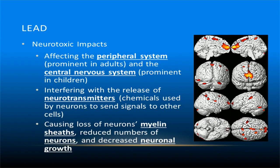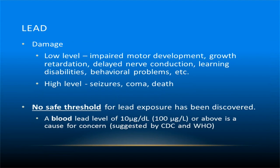Lead is a neurotoxic metal widely used in building construction, lead acid batteries, and bullets. Lead interferes with the release of glutamate, a neurotransmitter important in many functions including learning, by blocking NMDA receptors. This leads to a loss of the neurons' myelin sheaths, a reduction in the number of neurons, and decreased neuronal growth. The picture shows regions in the brain with significant volume loss in adults associated with childhood lead exposure, shown with red and yellow clusters overlaid upon a standard brain template. Damage caused by lead exposure in small quantities over time includes impaired motor development, growth retardation, delayed nerve conduction, learning disabilities, and behavioral problems.